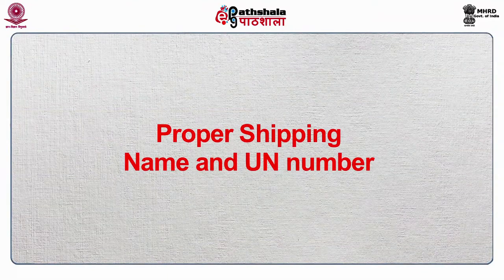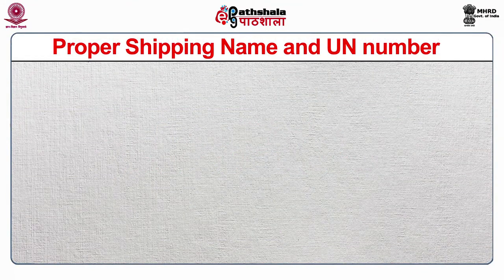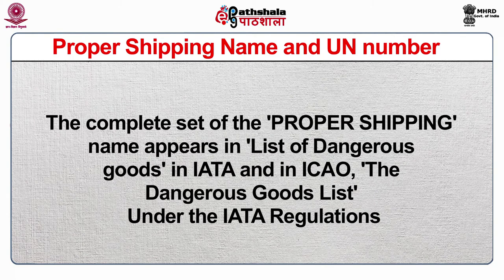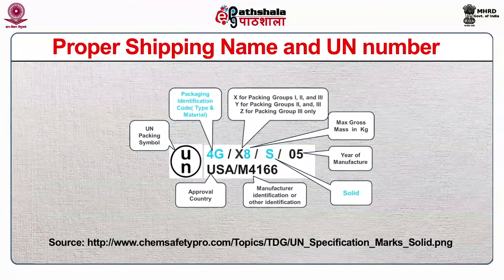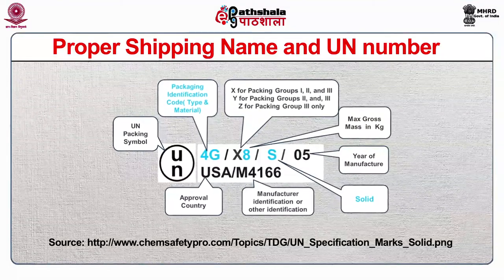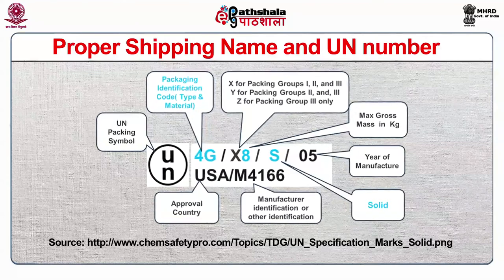Proper shipping name and UN number: the complete set of the proper shipping name appears in the list of dangerous goods in IATA and in ICAO. For most shipping names, they have a four-digit number headed by UN and preceded by ID. For example, acetyl flammable liquid has been designated under UN 1088. Because it is a flammable liquid, it is placed into Class 3 and assigned to Packaging Group 2.